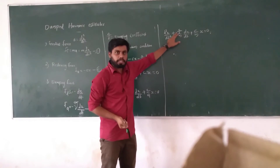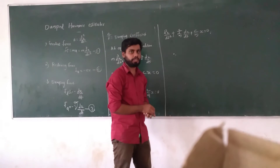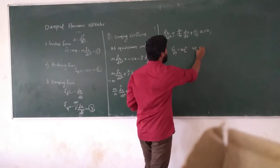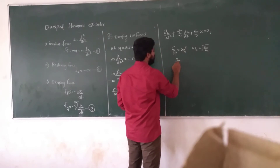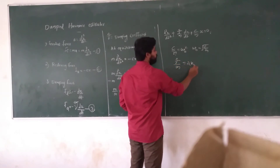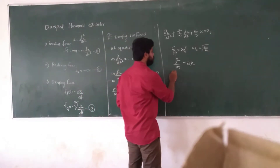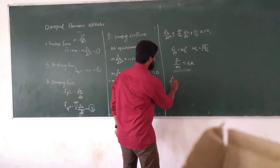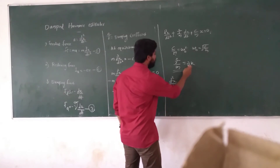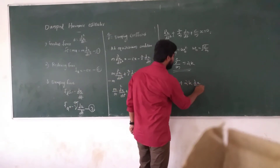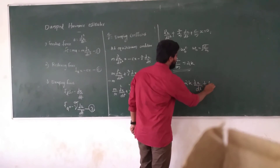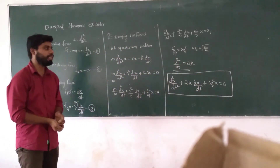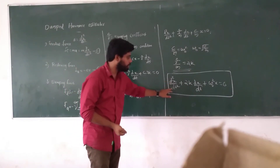Here gamma is a constant. We define the natural frequency: c/m equals omega squared, and gamma/m equals 2k, where k is the damping coefficient. So the equation becomes: d²x/dt² plus 2k into dx/dt plus omega squared x is equal to zero.